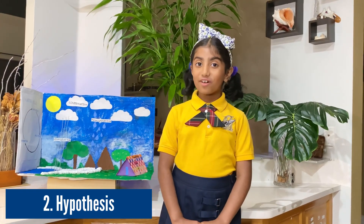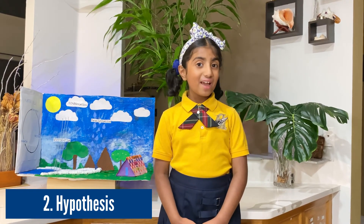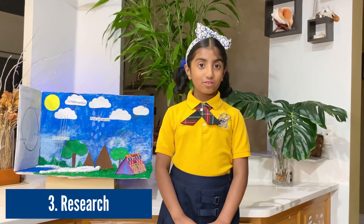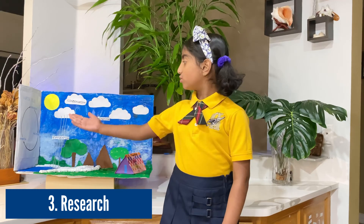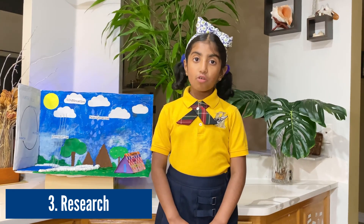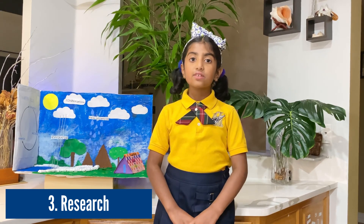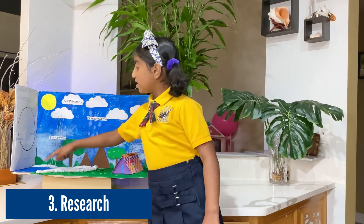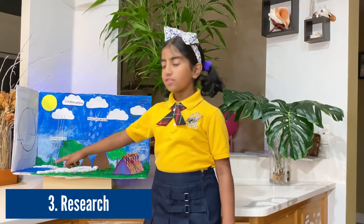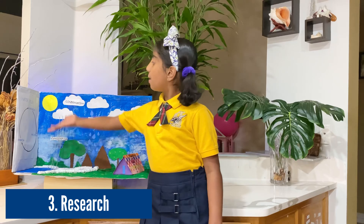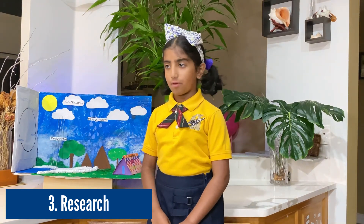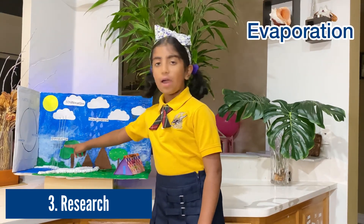I think the water cycle will explain the answers for my question. I researched about the water cycle and I made a poster on the model to show. As we all know, 71% of Earth's total area is covered in water. The sun heats up the water in the rivers and oceans and it comes up as water vapor. That is called evaporation.